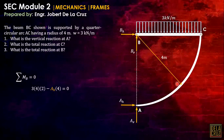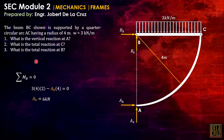That gives: 3 kN/m times 4 meters (the radius) times 2 as the moment arm, creating counter-clockwise moment at B, minus AH times 4 meters equals zero — giving us AH. To find the vertical reaction at A directly, we cannot solve it from the whole system alone since there are too many unknowns.